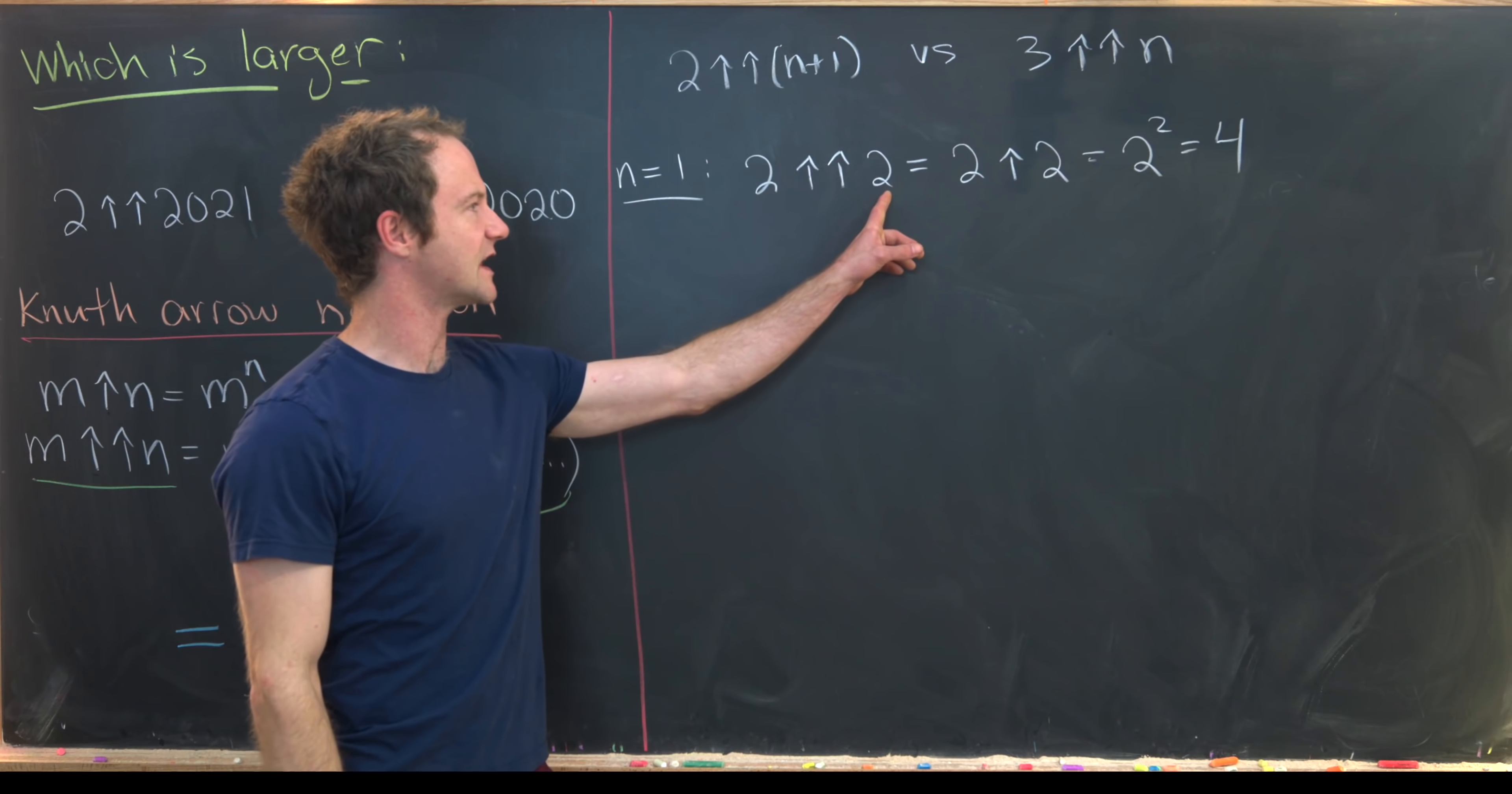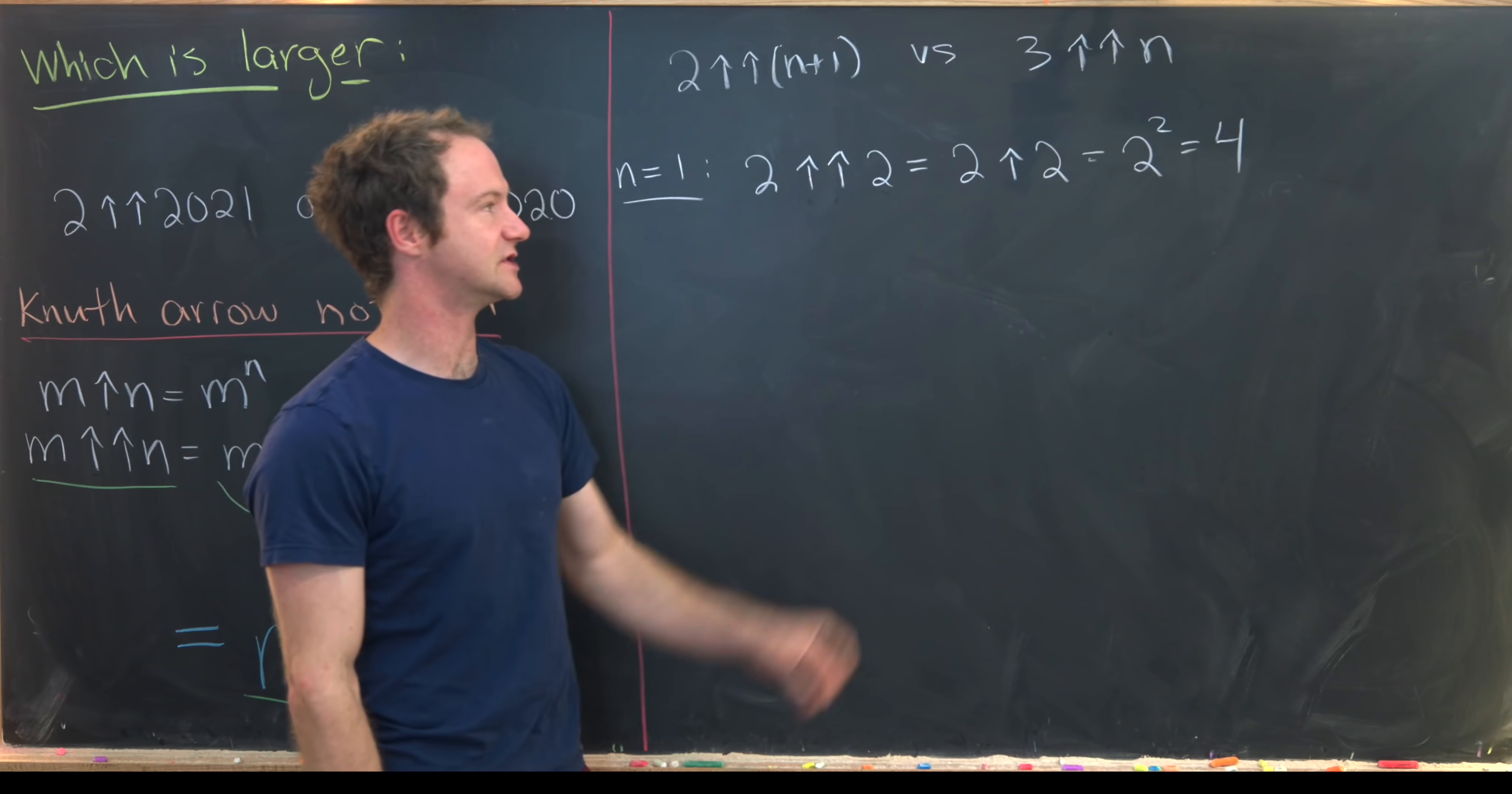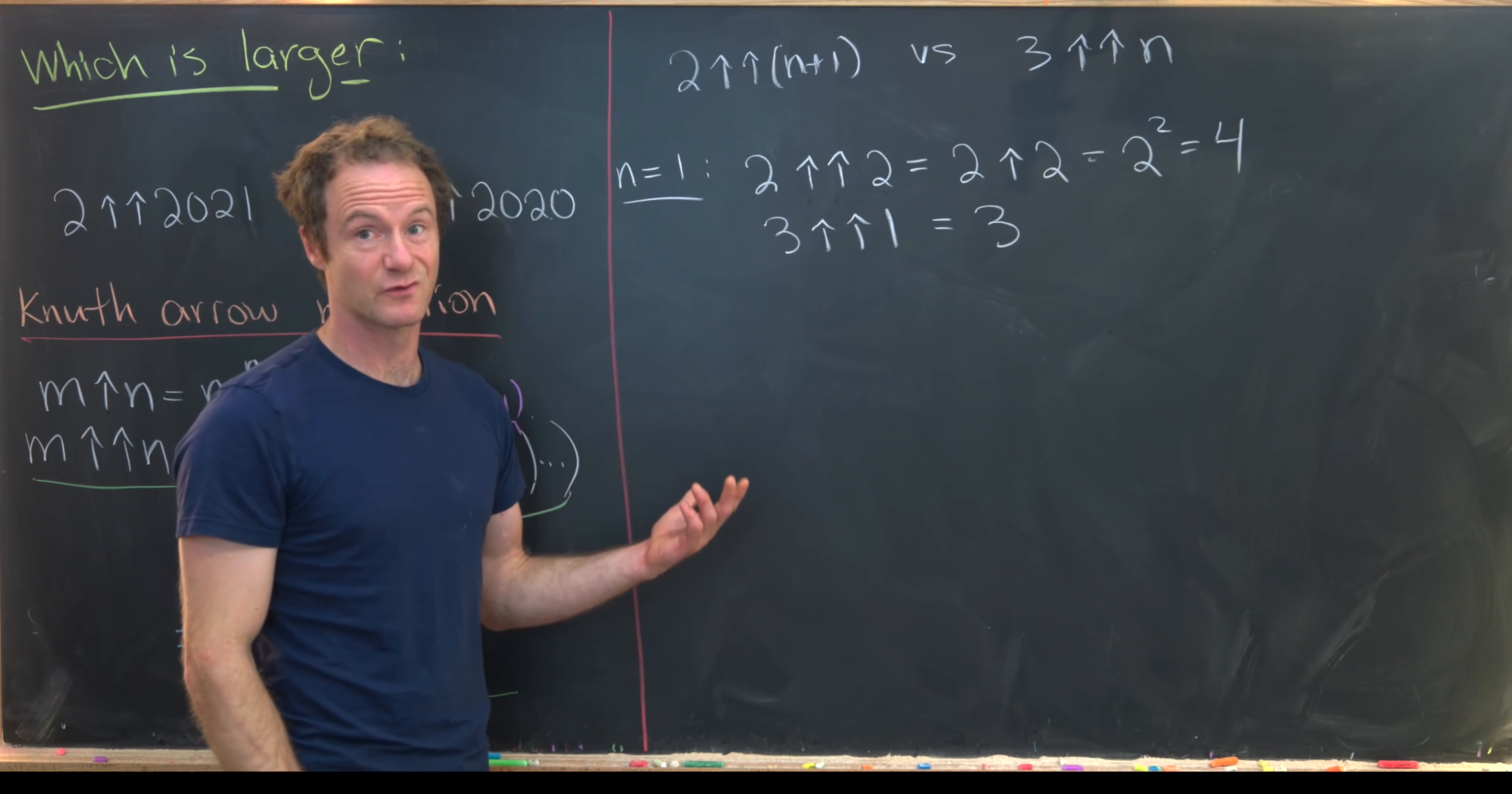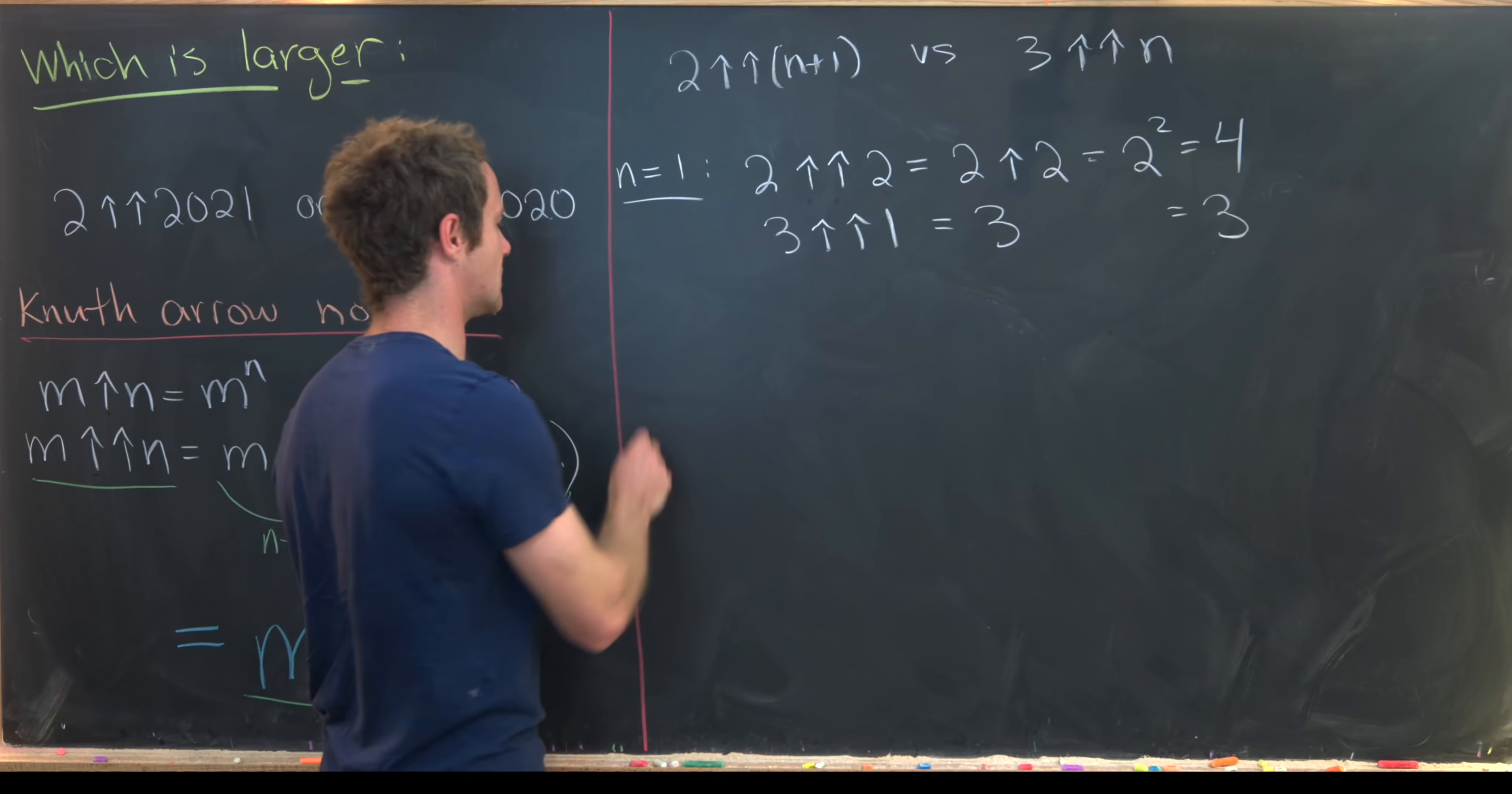Okay well notice that if you've got a 2 right here the double up arrow is the same as the single up arrow. And that's because you're repeating this exactly this many times. So the 2 gets repeated 2 times. But now let's look at 3 double up arrow 1. Well that notice that's just going to be 3 repeated 1 time so just 3. Well that gives us 3. So in this case the 2 double up arrow is larger. Let's see if that continues on.